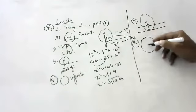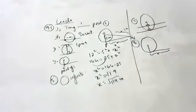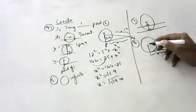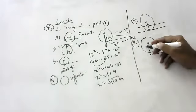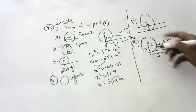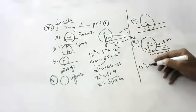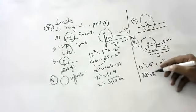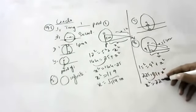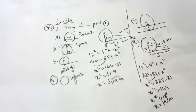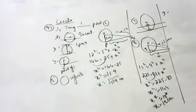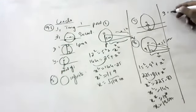Calculate the length of the tangent from a point 15 centimeters away from the center of a circle of radius 9 centimeters. Radius is perpendicular to the tangent, so: 15 squared equals 9 squared plus x squared. 225 equals 81 plus x squared. x squared equals 144, which is 12 squared. So the length of the tangent is 12 centimeters.